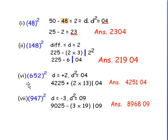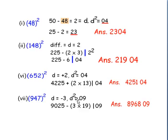Again, let us go to one more example: 652. 652 is nearer to 650, and the difference again is 2. Square of 2 is 4, so we write 04. And 4225 plus 13 into the difference gives 4251. So our answer will be 425104. One last example: 947 square. This number is nearer to 950. Its difference will be minus 3. So D square will be 09. We write 09 first, and then 9025 minus 19 into 3 gives 8968. So the square of 947 is 896809.